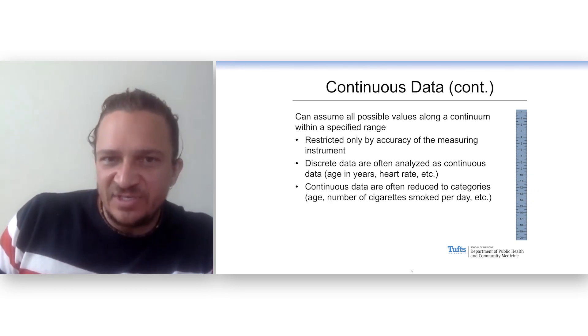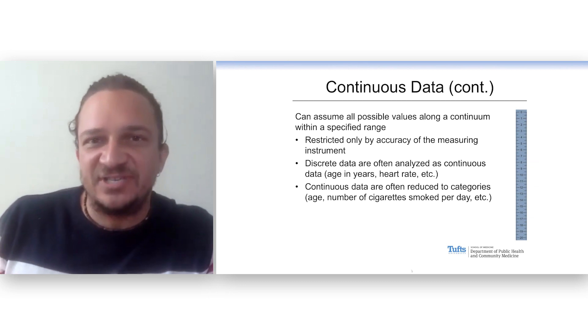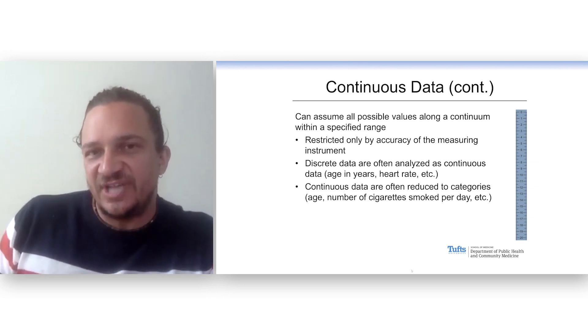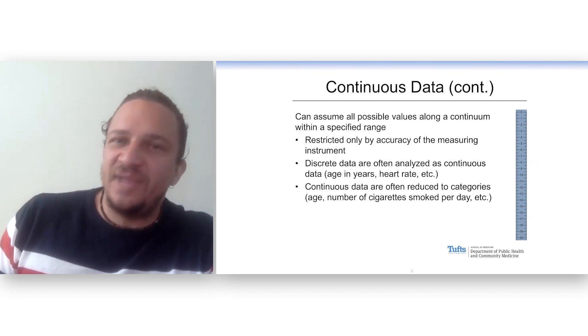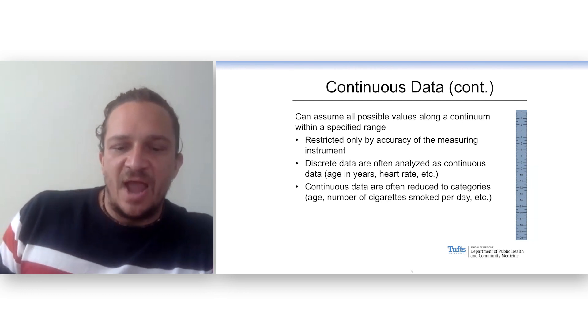We often take continuous data and turn it into discrete. Again, how old are you? I'm 43,000 days old. That's weird. You would just say how many years old you are. Oftentimes, we take discrete data and we analyze it as continuous. How many kids does the average American have? 2.4. That's fine. You can say that even though you can't have 0.4 of a kid.